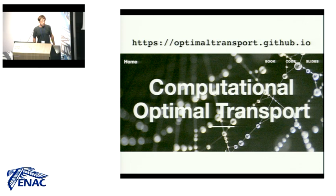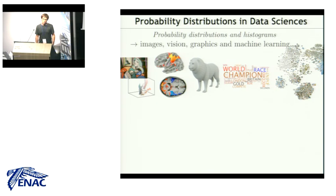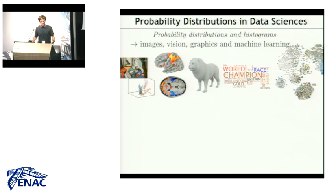Before starting, let's try to motivate a bit why we want to go to this idea of geometry for distributions — optimal transport, of course, but more generally introducing distances that take into account the geometry. Many problems ranging from signal processing, image processing, data science, and more and more machine learning require you to handle distributions of points, distributions of mass, densities that you want to compare.